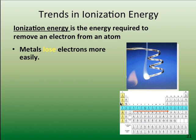If you look at a period going across, remember what happens to the atomic radius as you go across: the atomic radius decreases because the attractive force for the electrons is increasing. The number of protons is increasing, and the number of electrons are increasing as well, but those electrons are on the same energy level. They don't see the other electrons on that energy level, so they get pulled into that positive nucleus.